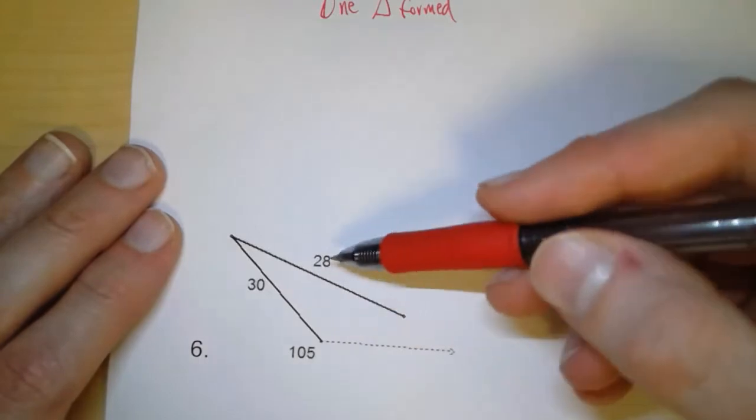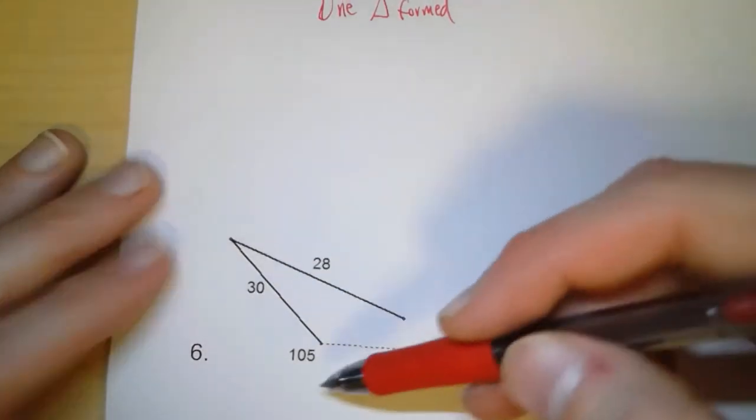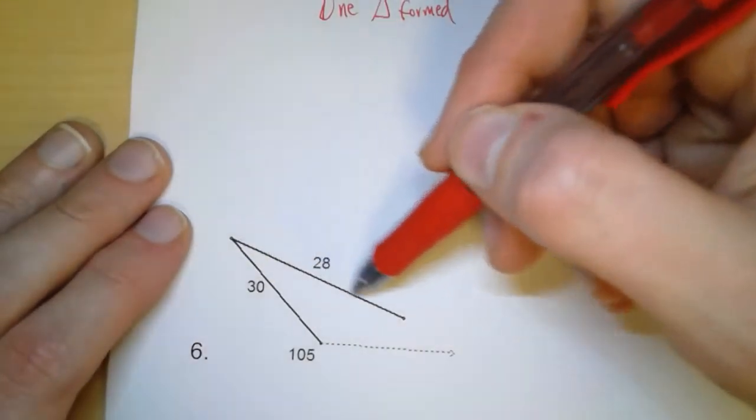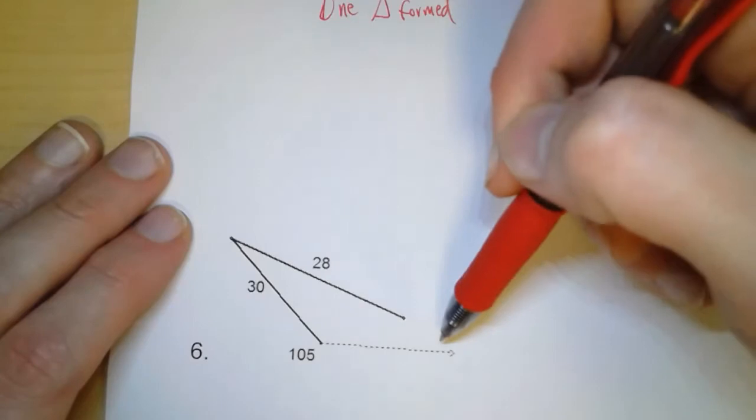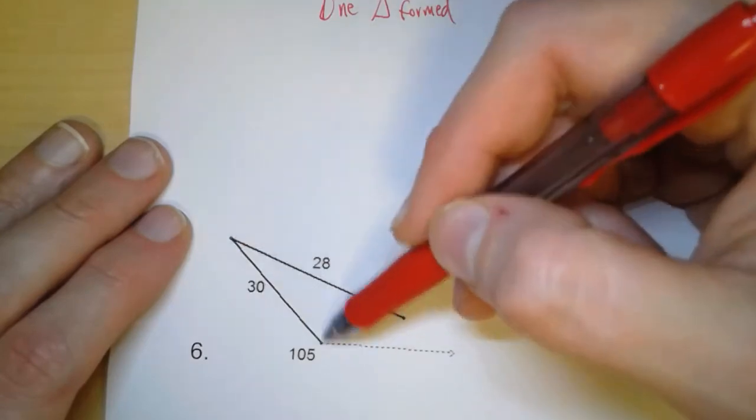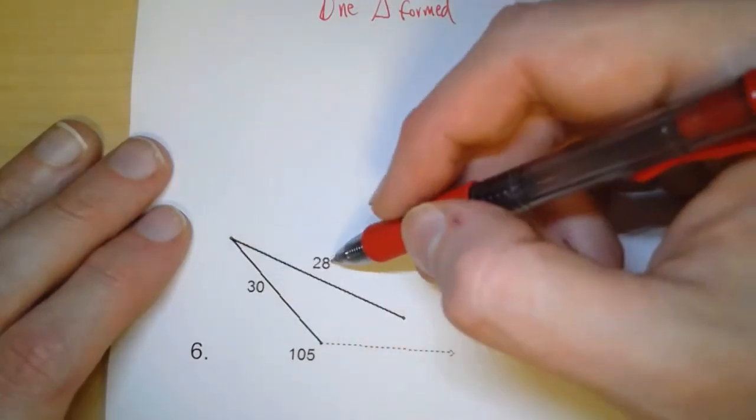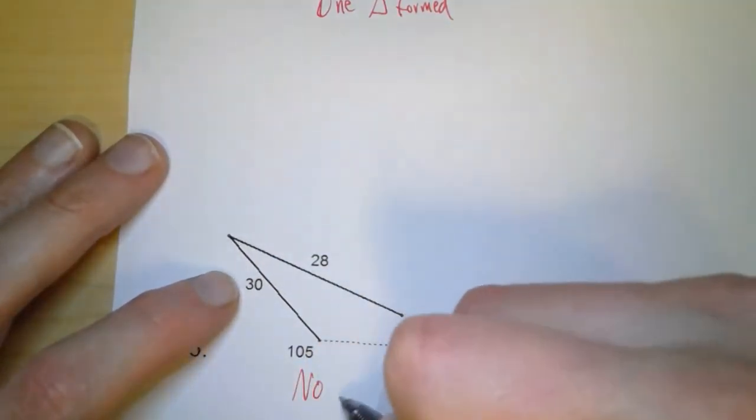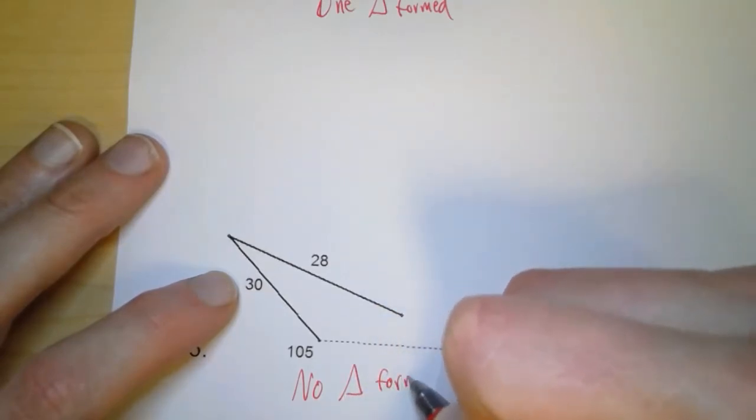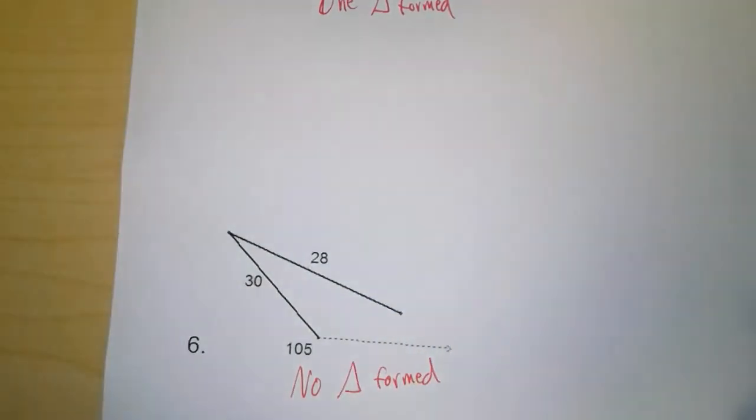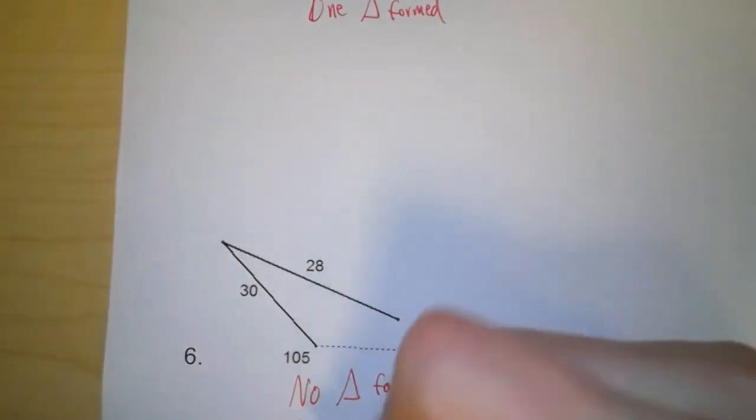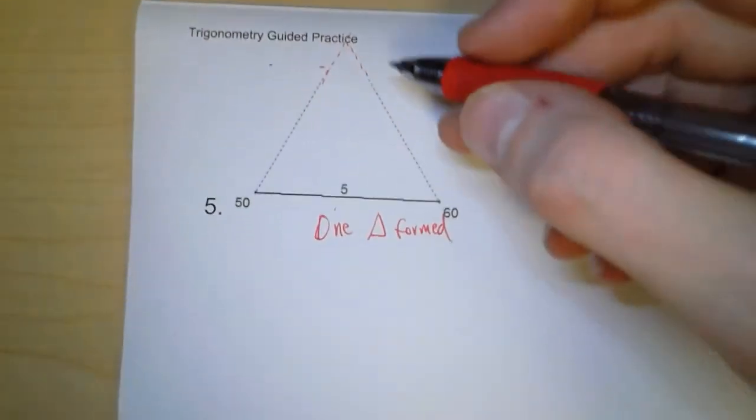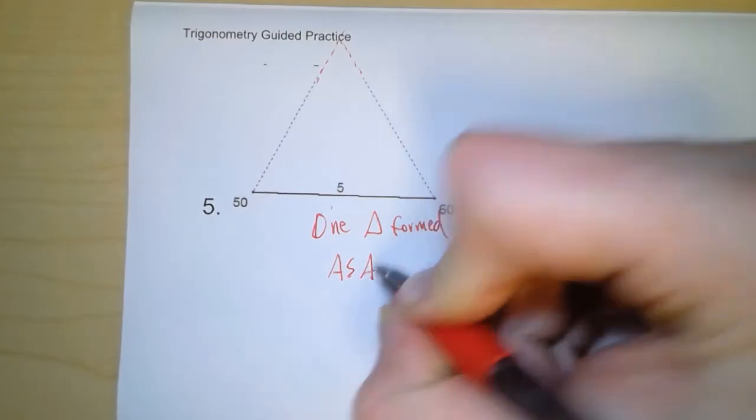Down here, here we have another case of side-side-angle, but this is obtuse. And so this one is actually easier because the question is, is this side long enough to reach? Well, how long does it have to be? Well, it just has to be longer than 30. So because 28 is not as long as 30, here we have no triangle formed. So here's another example of side-side-angle, whereas up here, here we had angle-side-angle.